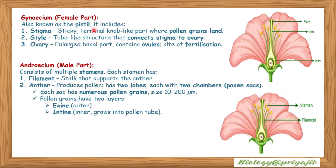The gynoecium, also known as the pistil, includes: stigma — the sticky, terminal, knob-like part where pollen grains land; style — the tubular structure that connects the stigma to the ovary; and ovary — the enlarged basal part that contains the ovule and is the site of fertilization.